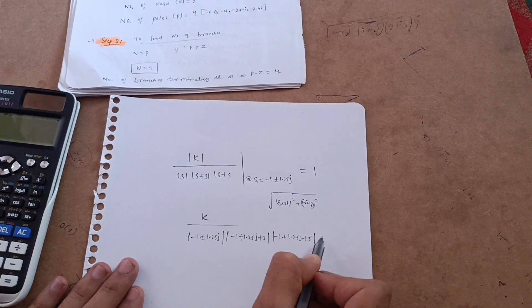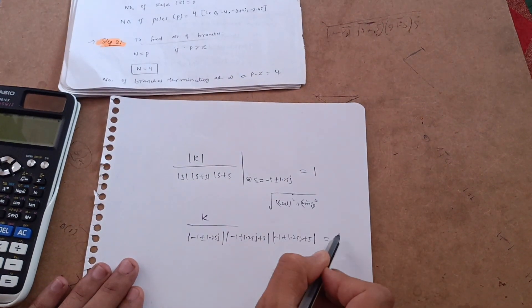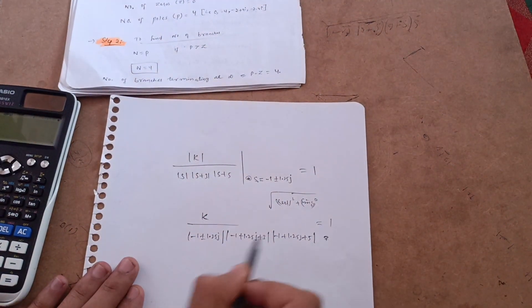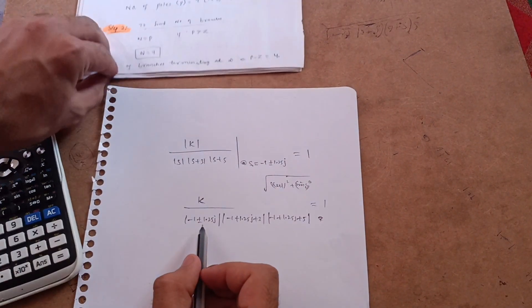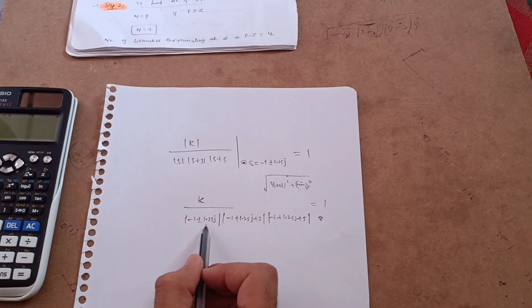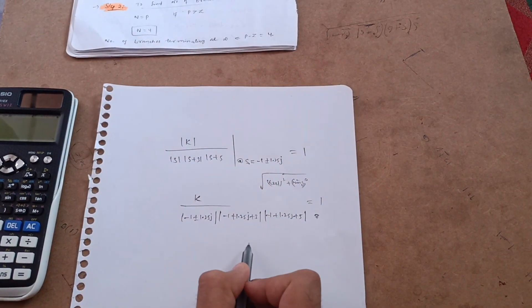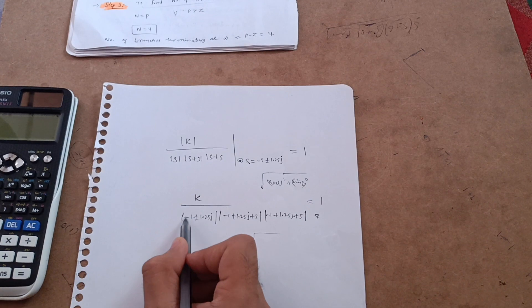Now you have to calculate it in the calculator. The formula is, whenever you get the terms in magnitude, you have to write down the formula that is under root of what is the real part.